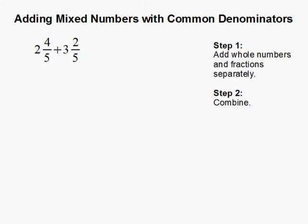Adding mixed numbers with common denominator. In this problem, we have 2 and 4 fifths plus 3 and 2 fifths. The first step is to add the whole numbers and fractions separately.